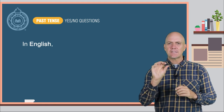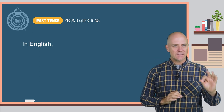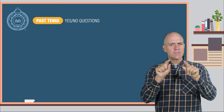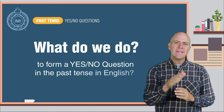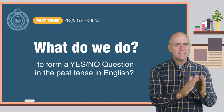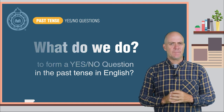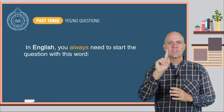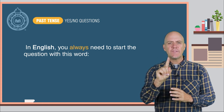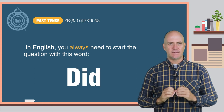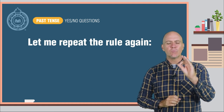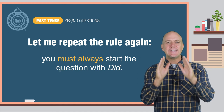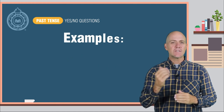In English, to ask a yes-no question in the past tense, the structure is a little different. So what do we do to form a yes-no question in the past tense in English? In English, you always need to start the question with this word: did. Let me repeat the rule again — you must always start the question with did.